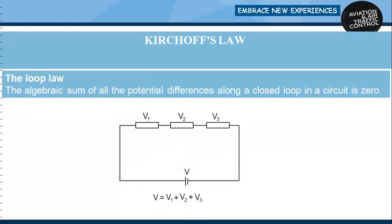Kirchhoff's Second Law is known as the loop law. It states that the algebraic sum of all the potential differences along a closed loop in a circuit is zero. Therefore, the summation of V across the loop equals V1 + V2 + V3.